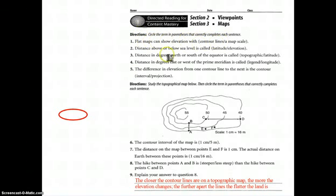Flat maps can show elevation. Distance above or below sea level is its elevation. Distance north or south of the equator is called the, remember, north or south of the equator. It's the lines of latitude. The difference in elevation from one contour to another is a contour interval, the interval between the lines.